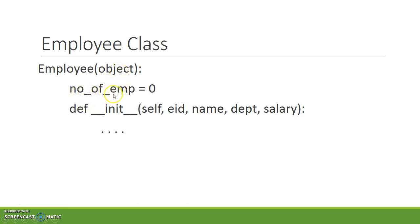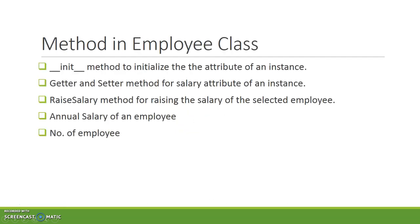The number of employees is a static or class variable which is initialized with zero. The __init__ method takes four attributes: ID, name, department, and salary. Methods we are going to declare inside the Employee class include the __init__ method to initialize instance attributes, and getter and setter methods just for the salary attribute.